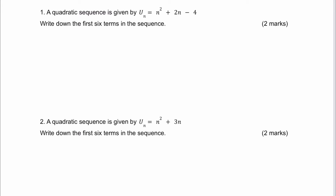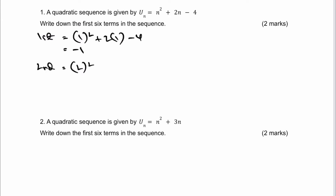The first question asks for the first six terms of the sequence given by n squared plus 2n minus 4. All you need to do is substitute into the equation. The first term is 1 squared plus 2 times 1 minus 4, which gives minus 1. The second term is 2 squared plus 2 times 2 minus 4, which gives positive 4. The third term is 3 squared plus 2 times 3 minus 4, which gives 11.